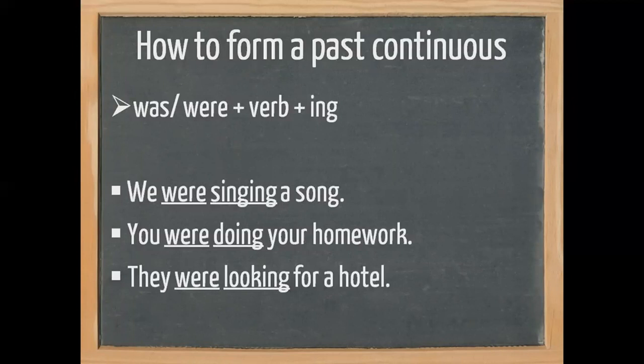You, which is the subject — with 'you' we use 'were', then we need 'do', which is the base form, then add '-ing': doing. So 'you were doing your homework'. They, plus 'were', we need the base form 'look' plus '-ing': looking for a hotel. They were looking for a hotel.